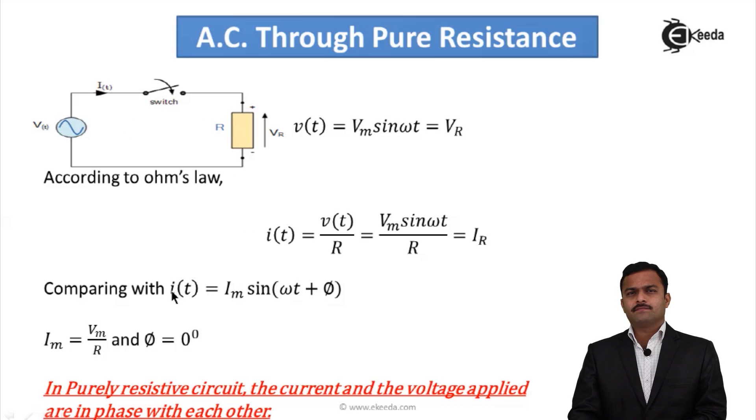This is the equation of current I am getting. If I compare with the standard equation I(t) = Im sin(ωt + φ), I will get Im as Vm divided by R, which is the maximum value of current. The φ term is missing here, so I can say φ equals 0 degrees. Remember, for voltage we have taken φ as 0, so current also I am getting φ equal to 0 degrees. The conclusion I can draw is that in a purely resistive circuit, the current and the voltage applied are in phase with each other because for both quantities phase angles I am getting is 0.